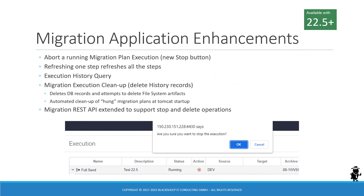The migration application has also received a significant update with 22.5. The ability to abort or stop a running migration plan execution is now included. Once you start a migration plan execution from the user interface, the action button changes to a stop button so you can manually stop it. There is also a REST API for that. Additionally, the refresh button for individual steps now refreshes all the steps at once, so you no longer have to consecutively click through all the dozens of steps to check status.